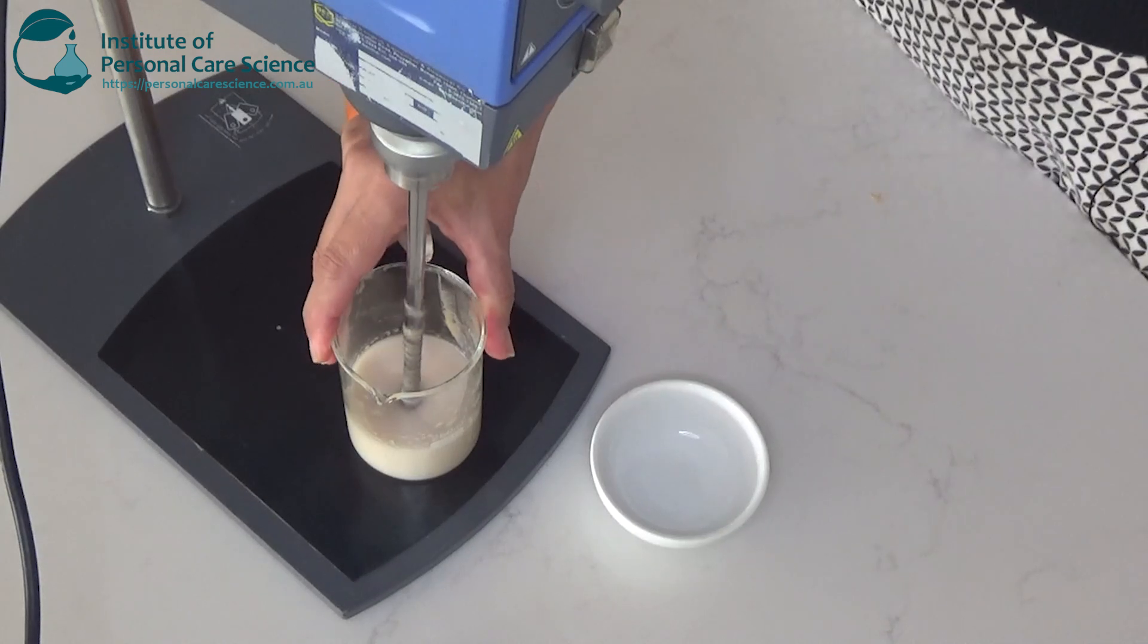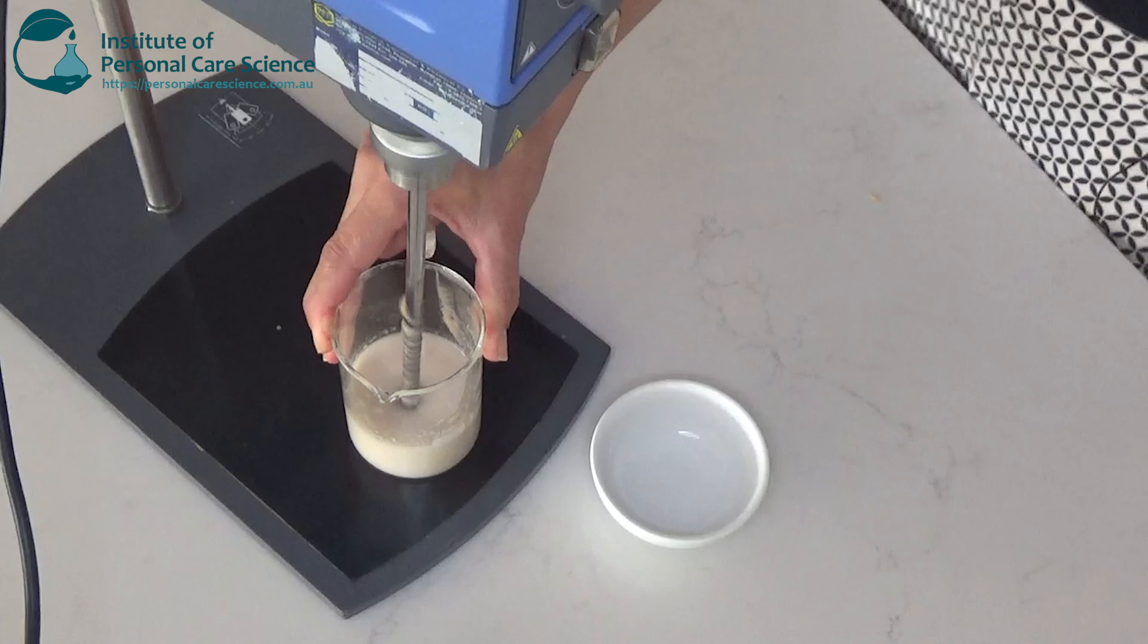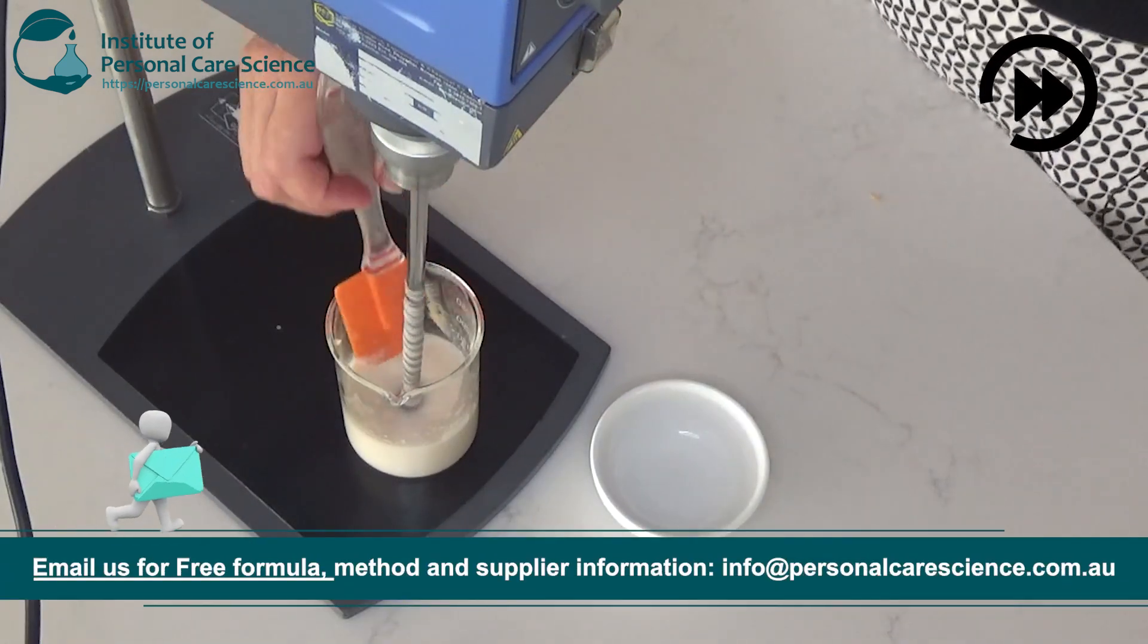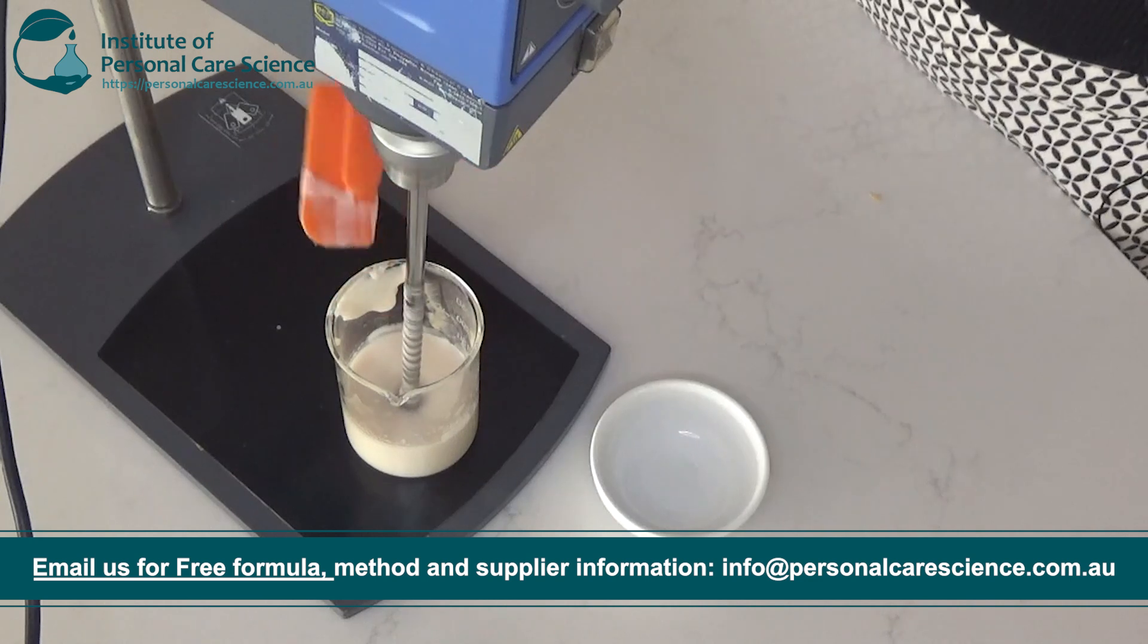The bentone is really great for stabilizing water and oil emulsions that have a really high water content. You can see that beautiful cream coming together now.